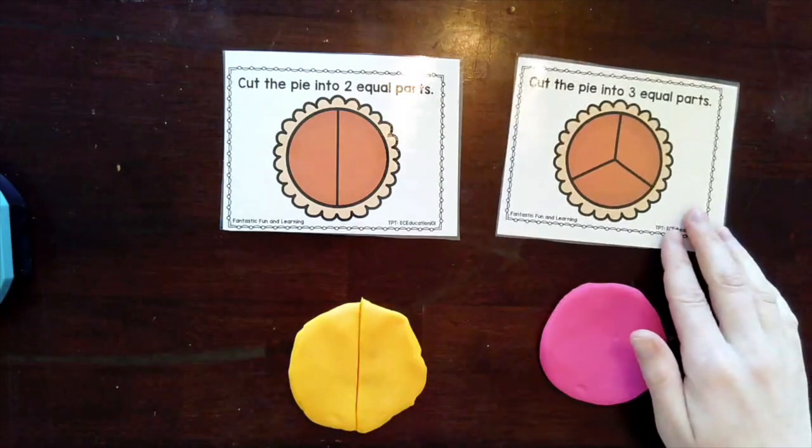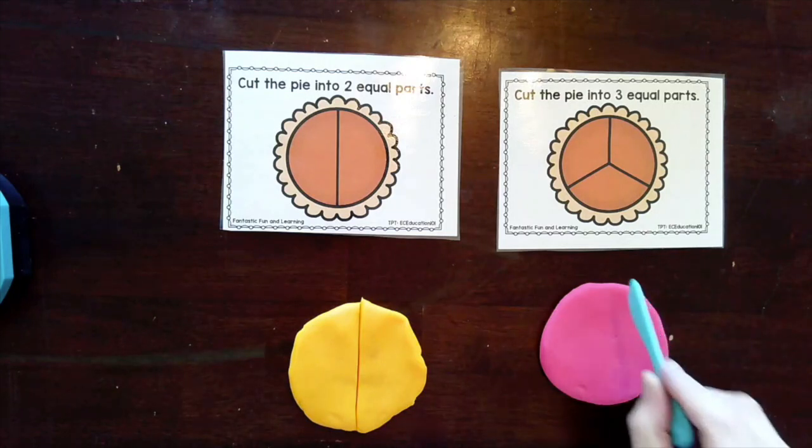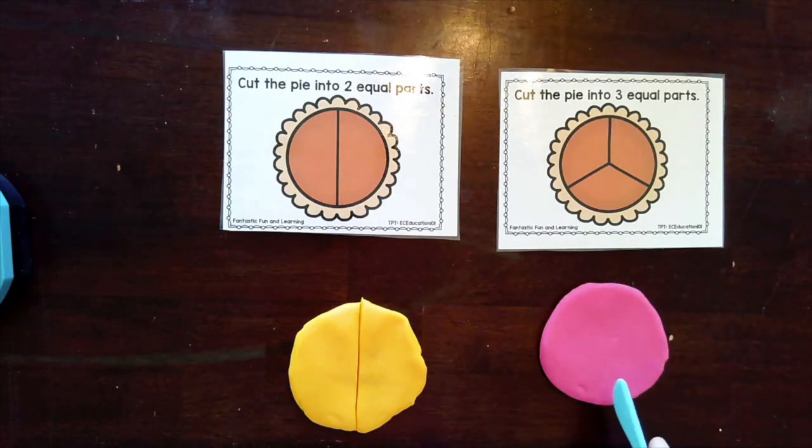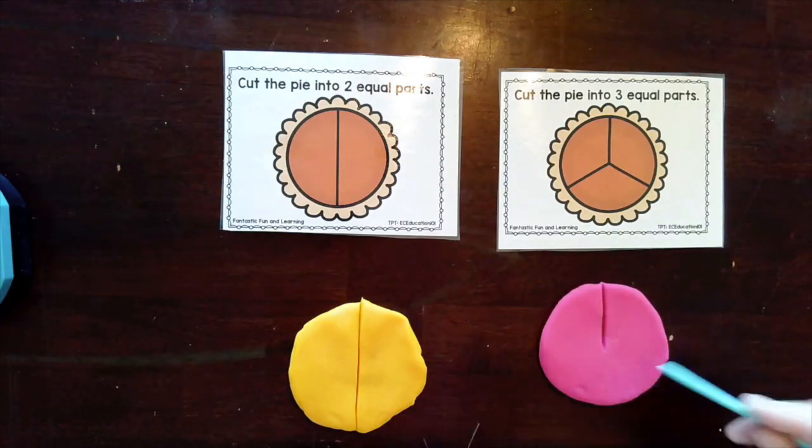For this one we're going to cut the pie into three equal parts which can be a little trickier since we can't use a line that goes straight down the middle. For this one I'm going to have to use my math brain and be really accurate. It's going to look something like a peace sign when I'm done.